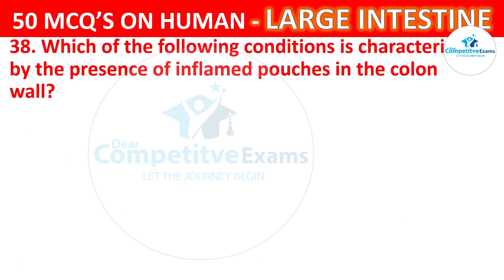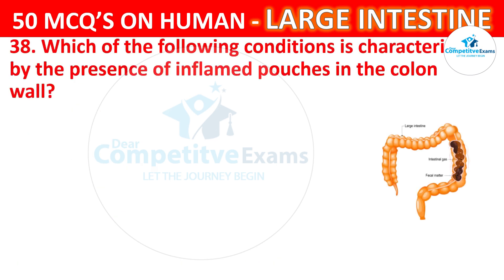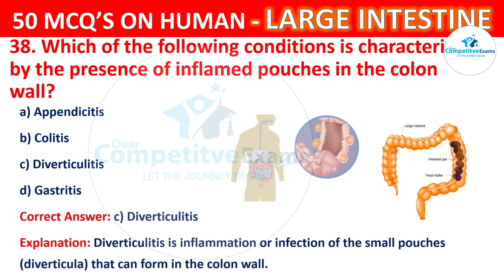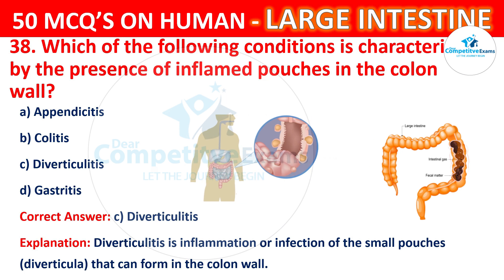Question number 38. Which of the following conditions is characterized by the presence of inflamed pouches in the colon wall? The options are Appendicitis, Colitis, Diverticulitis, or Gastritis. The correct answer is C, that is Diverticulitis. Diverticulitis is inflammation or infection of the small pouches that can form in the colon wall.